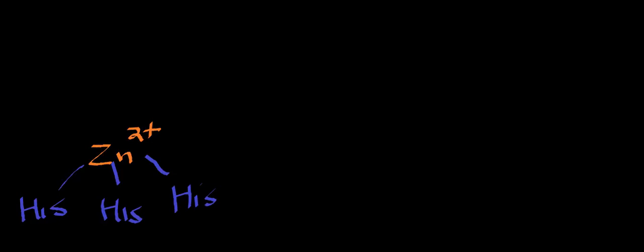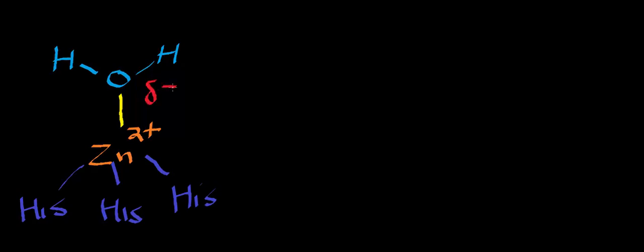The initial step of the carbonic anhydrase mechanism is the binding of water. Water is allowed into the active site. I'll put all interactions in yellow — the yellow line is not a bond, it's simply an interaction. Recall that oxygen has a partial negative charge, which interacts with the positive charge on the zinc. Carbonic anhydrase is a reversible equilibrium reaction, so all individual steps must also be reversible, shown with equilibrium arrows at each step.